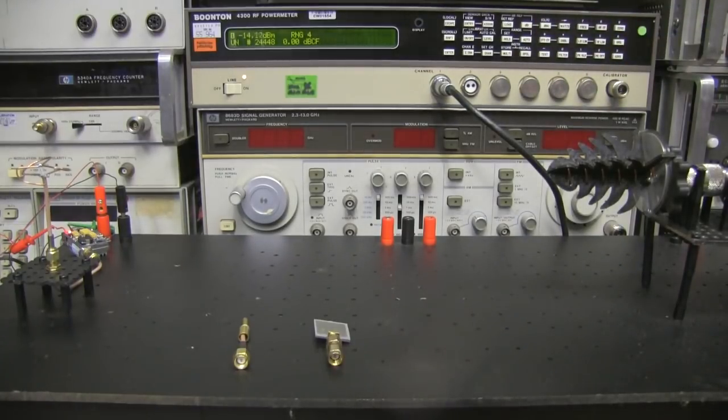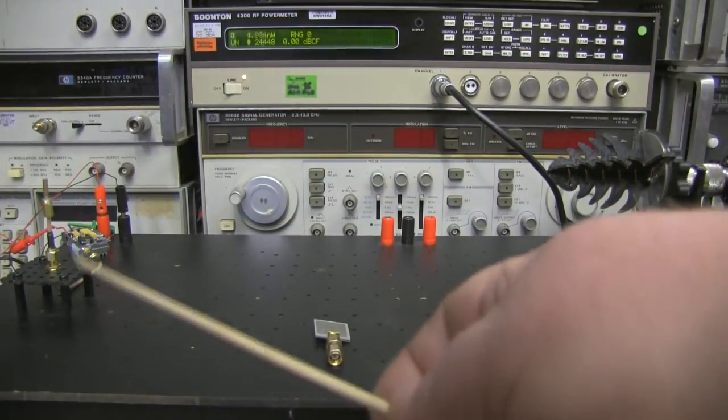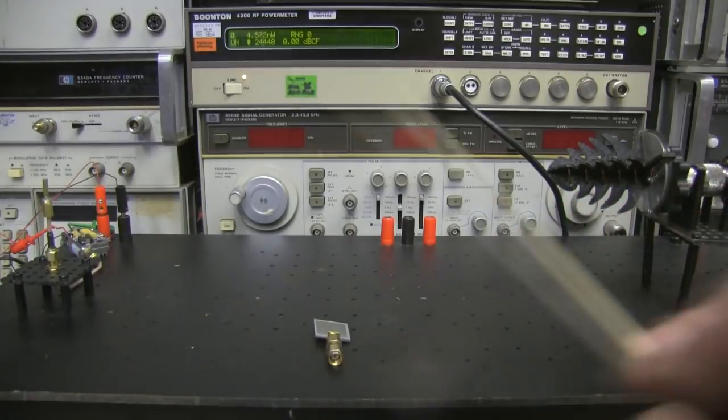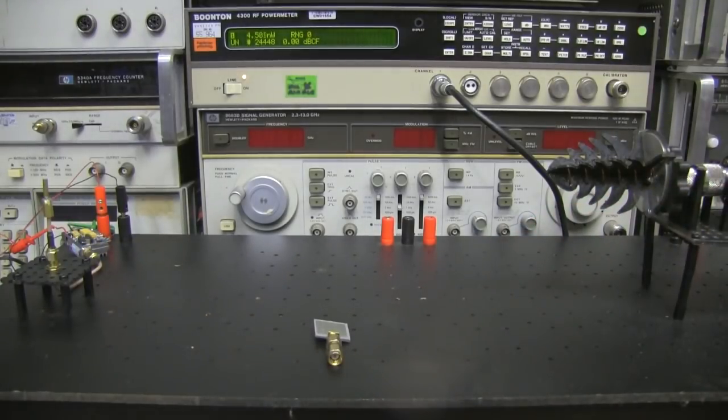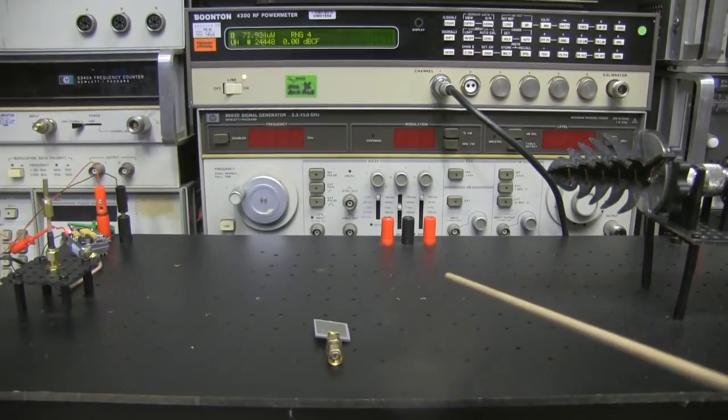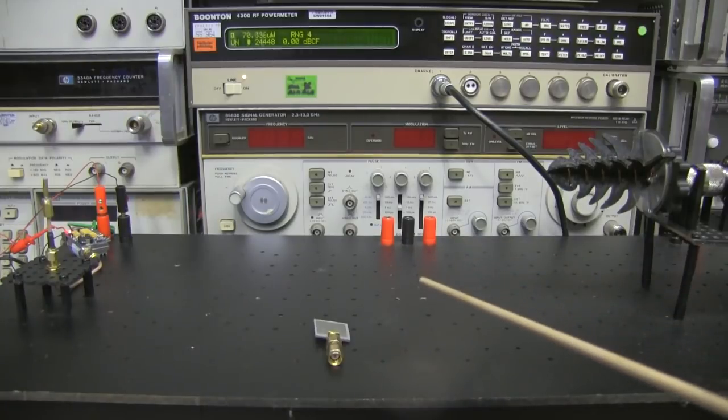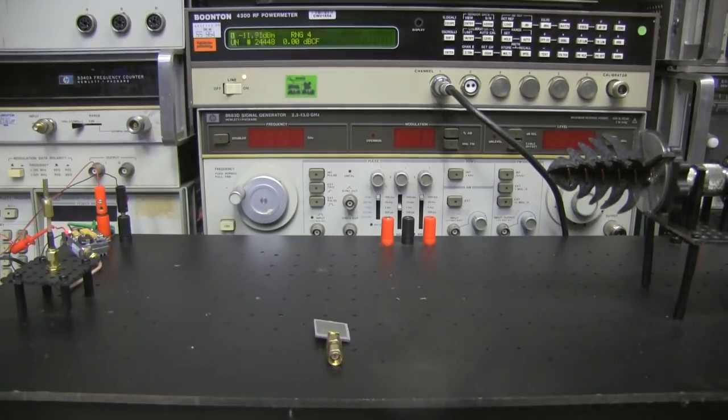And here it is on dBm, we're getting minus 14 dBm there, so definitely down on the power. So for this test we've got our little dipole antenna there with our left hand circular polarised helical here, turn on the power, and it's doing a little bit better, it's doing 72, 71 microwatts of power there, and it's minus 11 dBm.